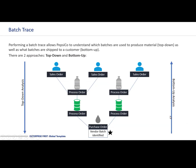Looking at the bottom-up analysis, it shows the same information but as a bottom-up scenario. We start with the batch created by the vendor and the inbound processing. Then the materials that are used to make the process order and are consumed. This will be the finished goods or semi-finished goods created from that process order. And lastly, where the materials went to — which sales order. And that is the batch trace.